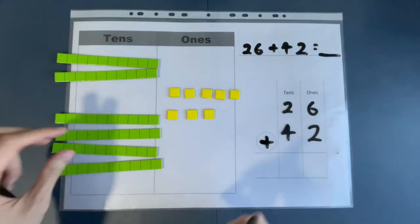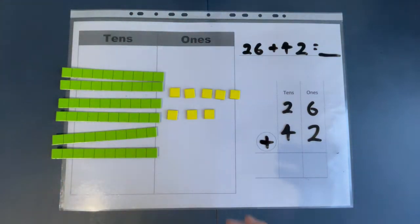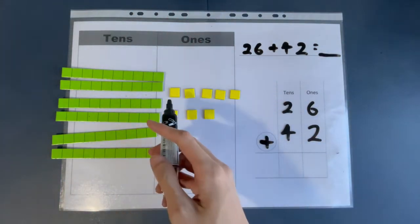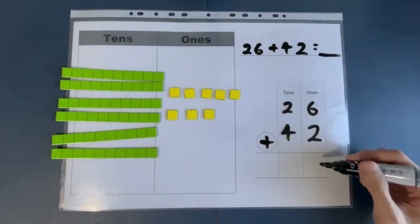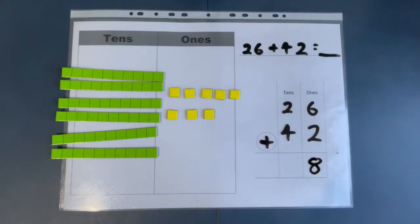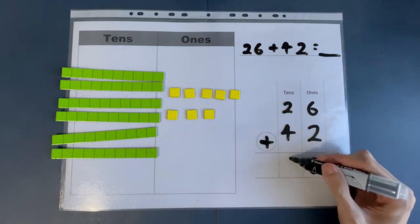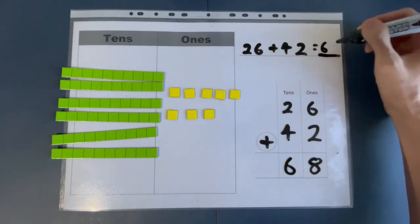So put together everything and see what we get. Let's start with the ones: how many ones are there? One, two, three, four, five, six, seven, eight. So six plus two is eight. And two plus four — how many tens do we have? One, two, three, four, five, six. So two plus four gives you six. What's the answer? 26 plus 42 gives you 68.